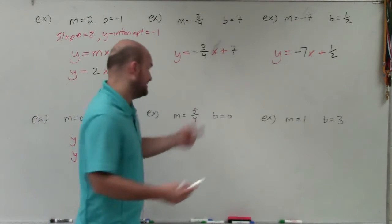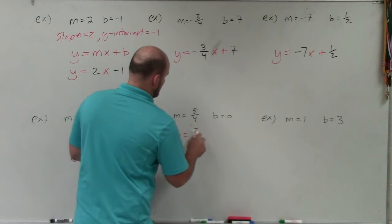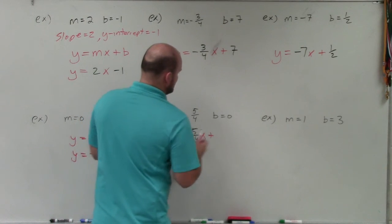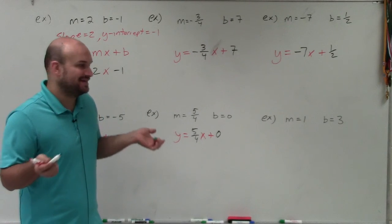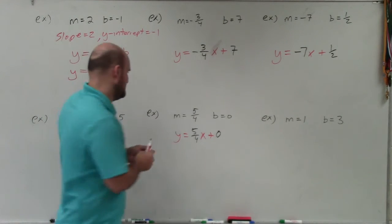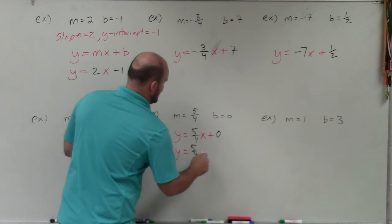Over here, our b is going to be equal to 0. So I do y equals 5 fourths x and then plus 0. Well, adding 0 is not really adding. You're not going to change anything. So this would just remain as y equals 5 fourths x.